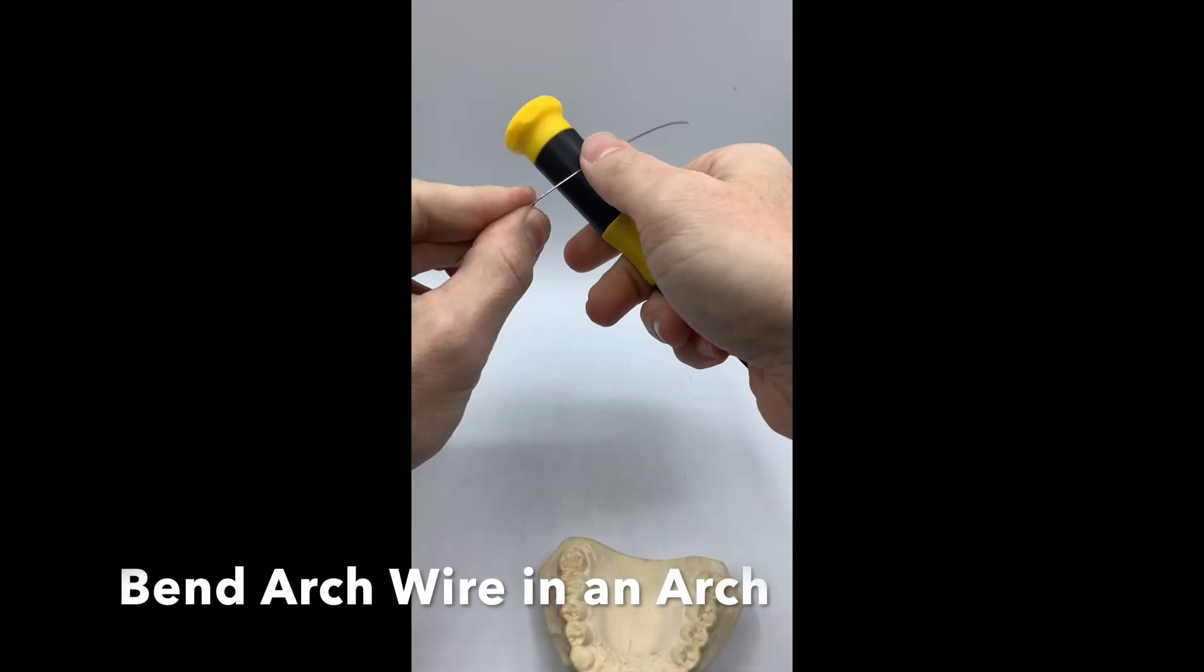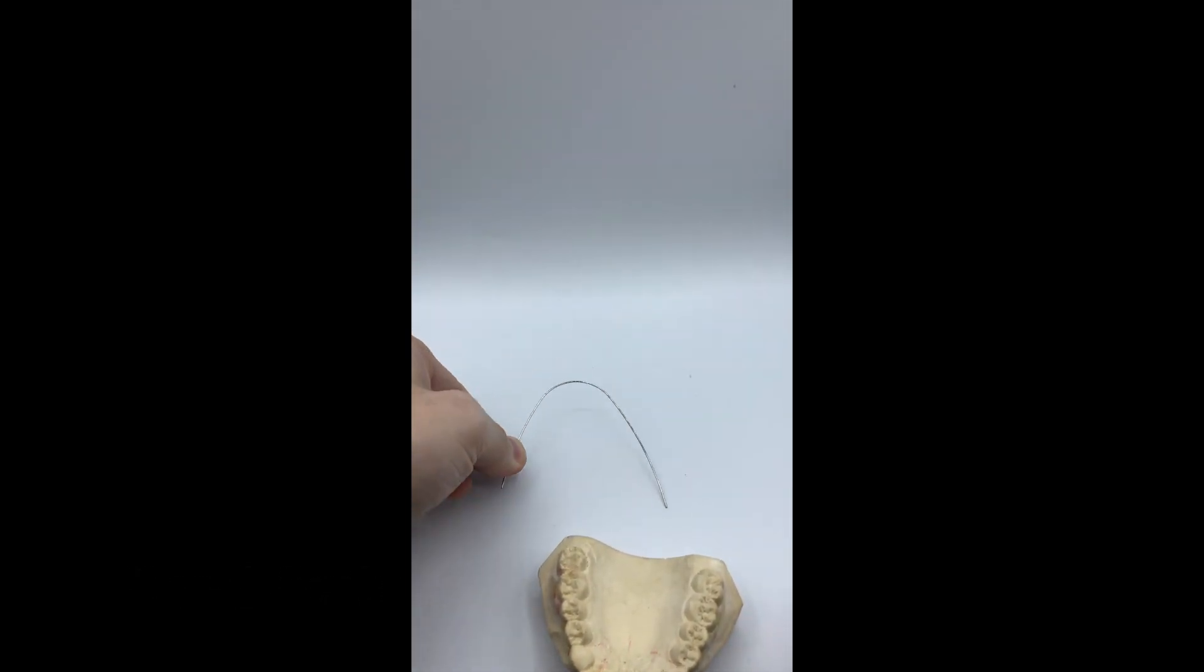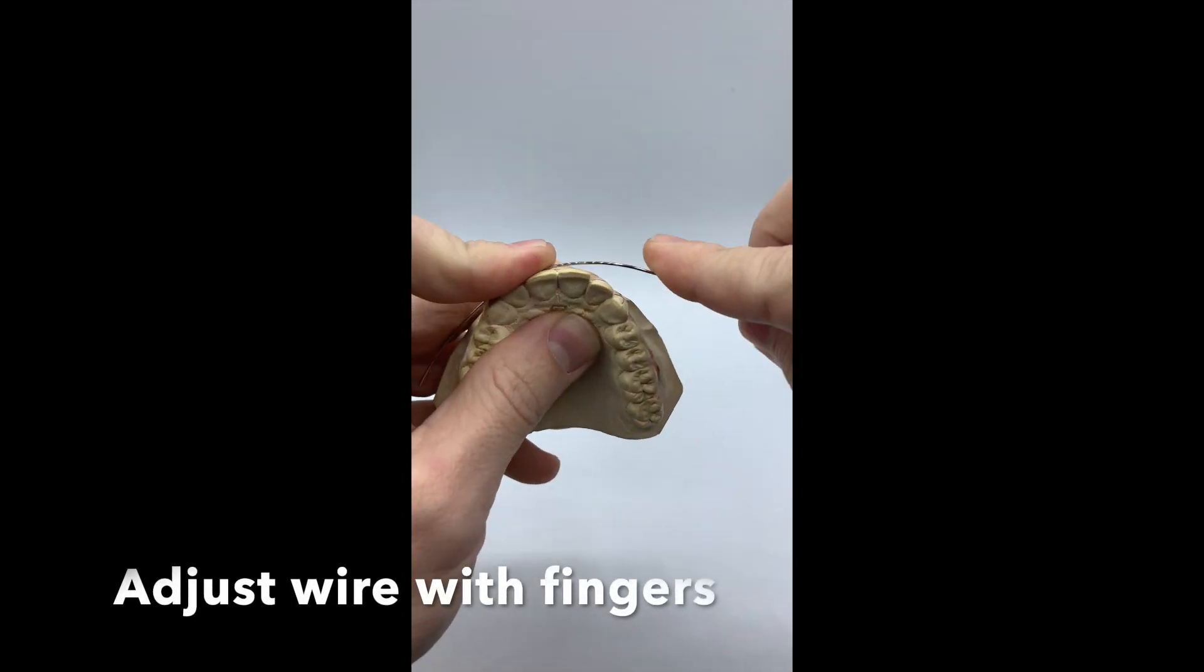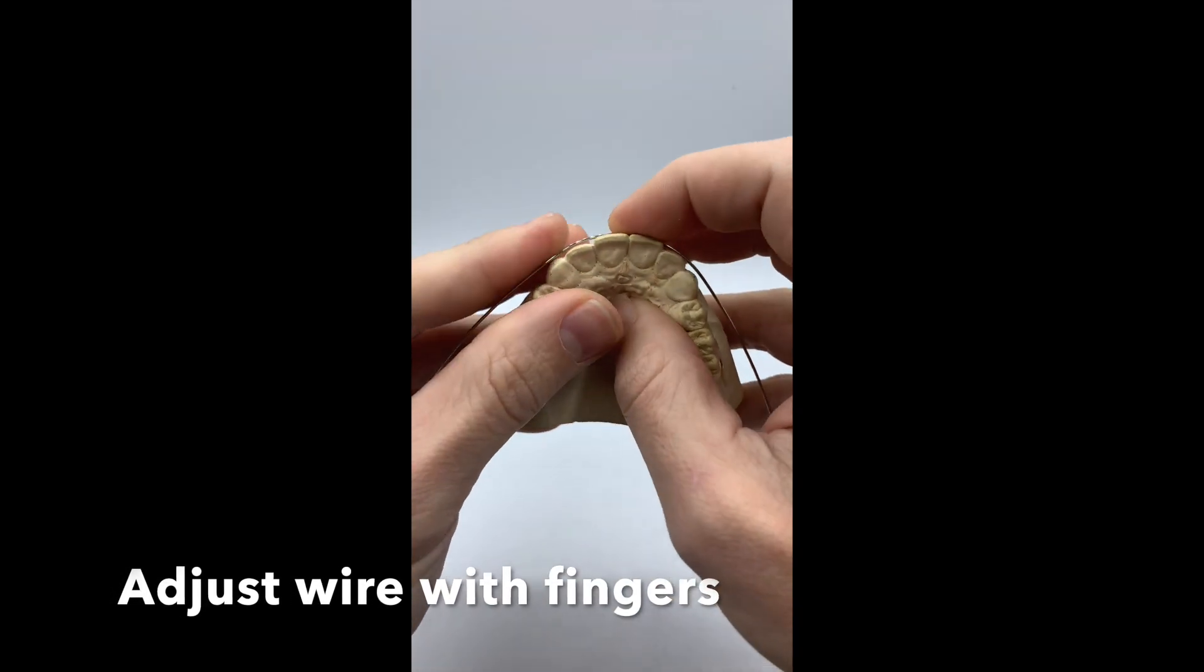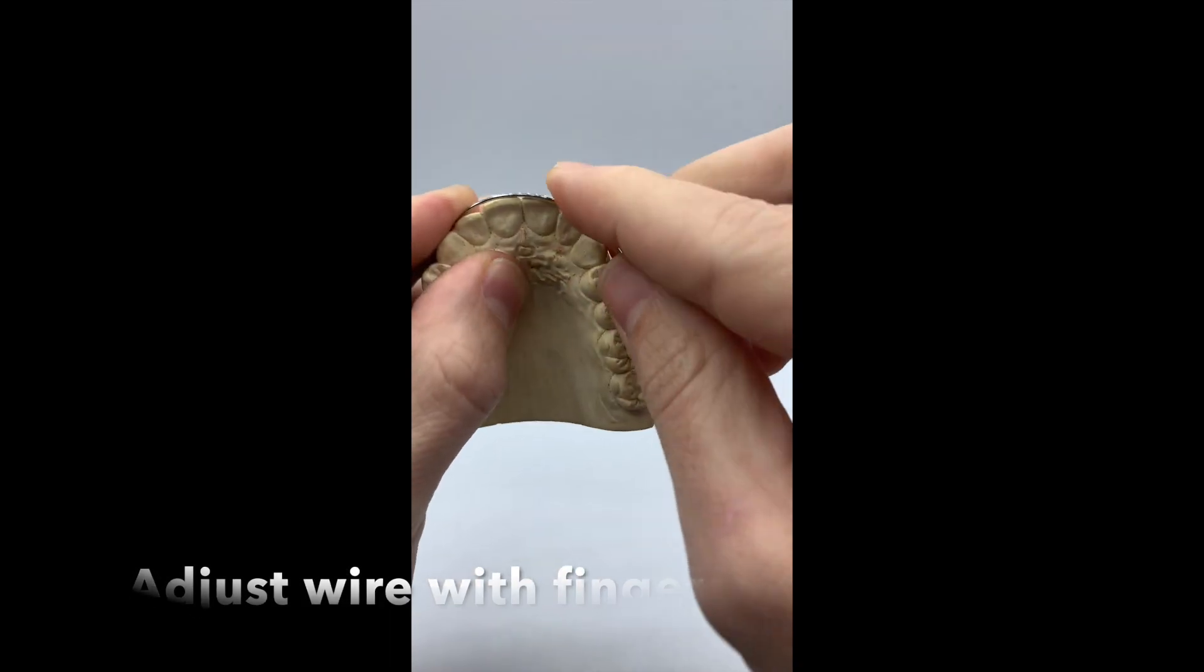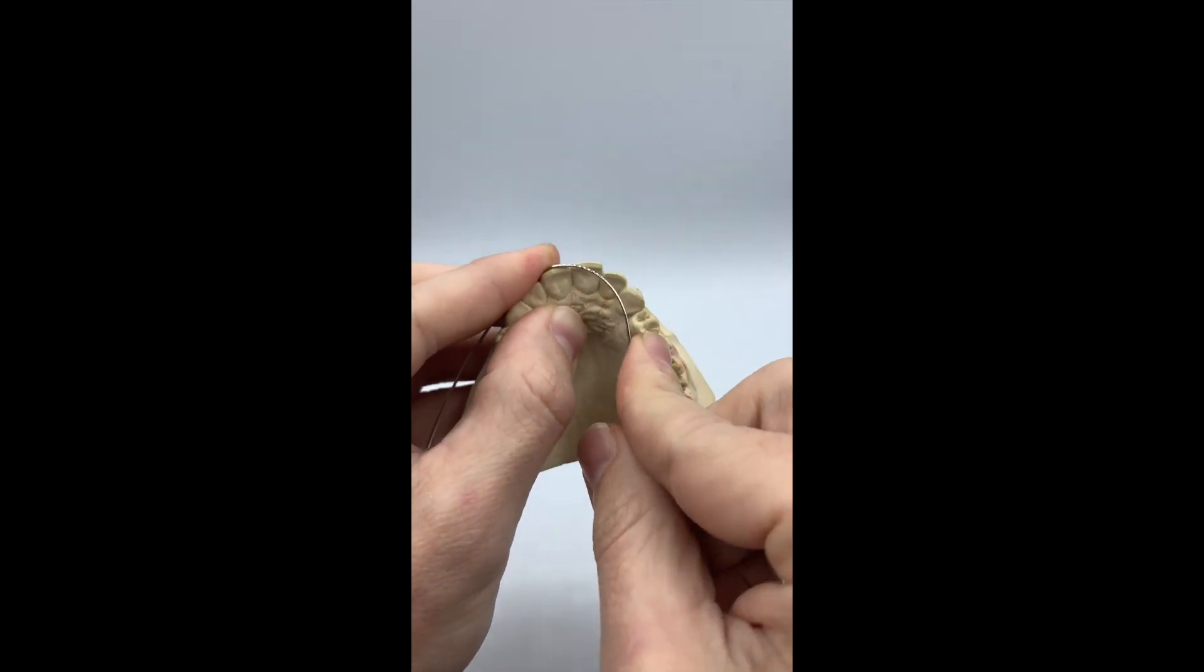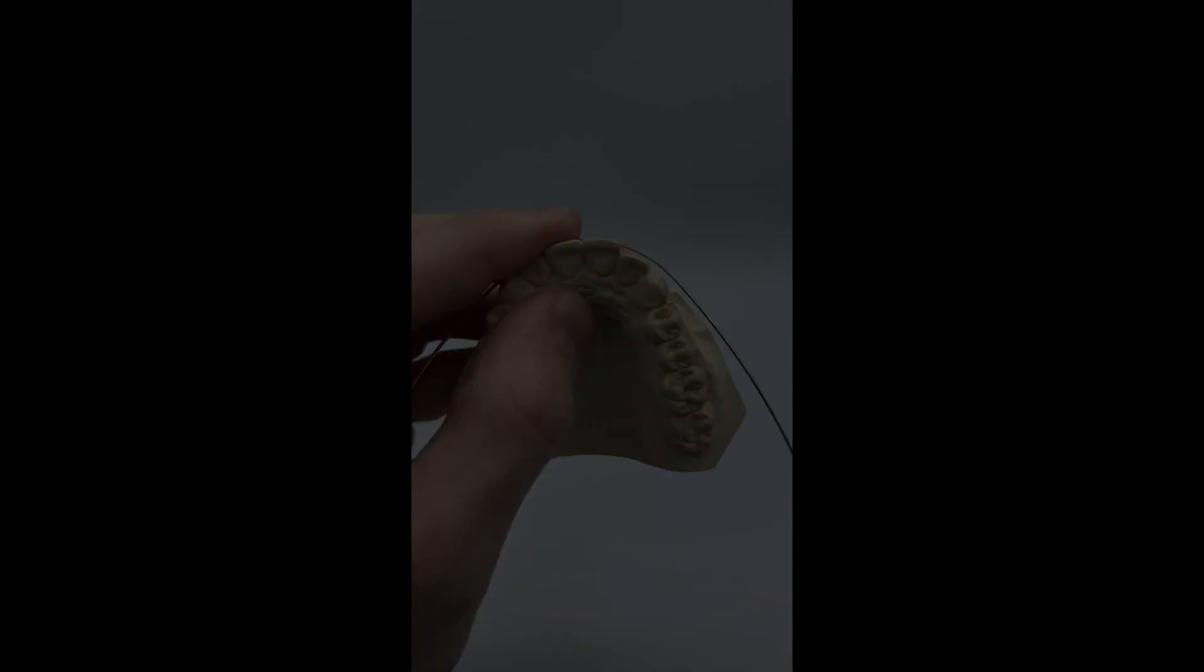You want to bend your arch wire in a symmetrical arch. With light adjustments with your fingers, you can apply pressure to allow the wire to touch all anterior teeth. If some teeth are in malocclusion, you will need your plier to allow it to touch the teeth.